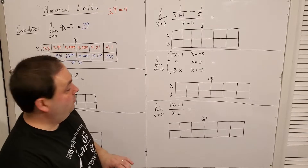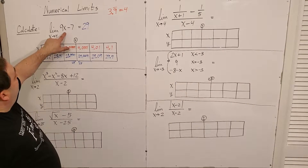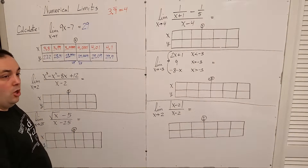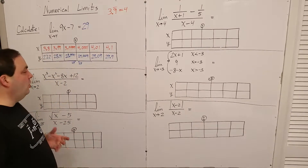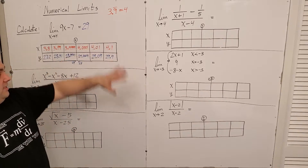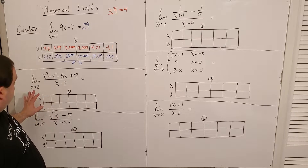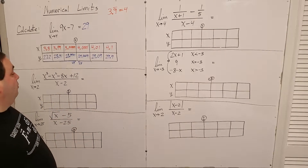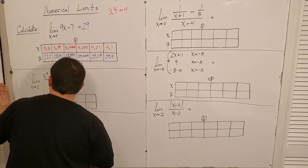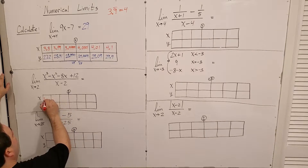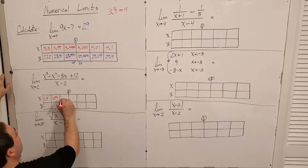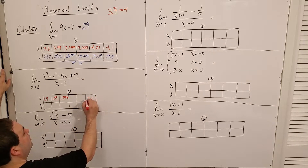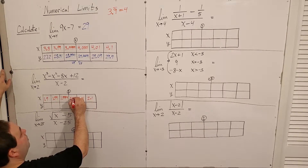That was a trivial one — if I plugged 4 in directly, 9 times 4 is 36 minus 7 is 29. The trivial ones are always overkill with limits, but it gives us language still. The more interesting ones are where you can't just plug the value in. For example, x cubed minus x squared minus 8x plus 12, all over x minus 2, as x approaches 2. On either side of 2: from the left, 1.9, 1.99, 1.9999; from the right, 2.1, 2.01, 2.0001.